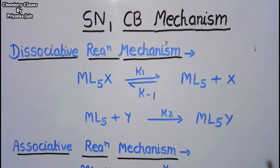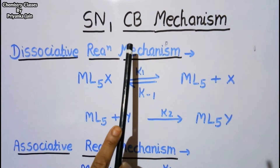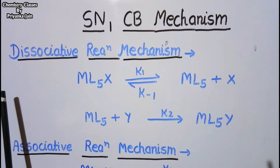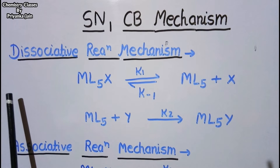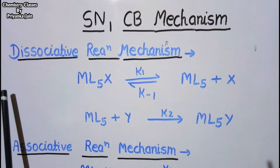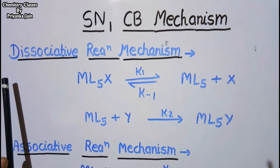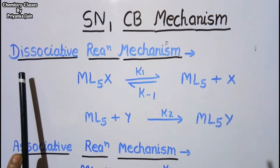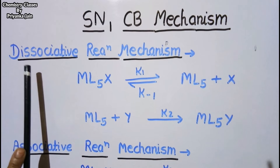Hello students. In this video we will understand about an interesting type of reaction mechanism known as the SN1CB reaction mechanism. We know about two different types of nucleophilic substitution reactions that generally happen in transition metal complexes: one is the dissociative mechanism and another is associative.